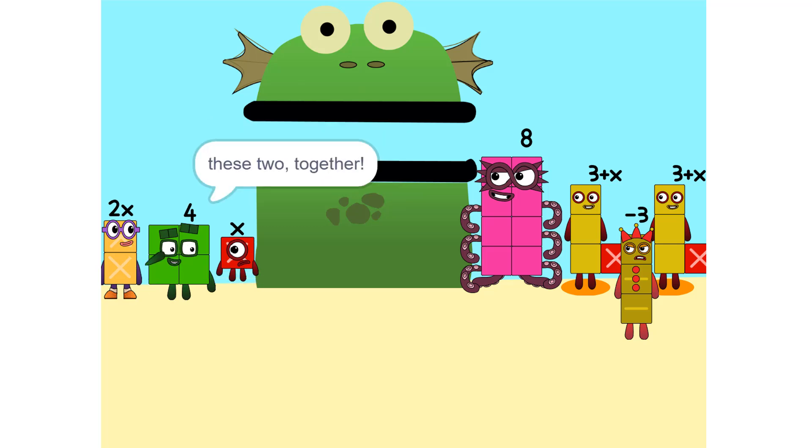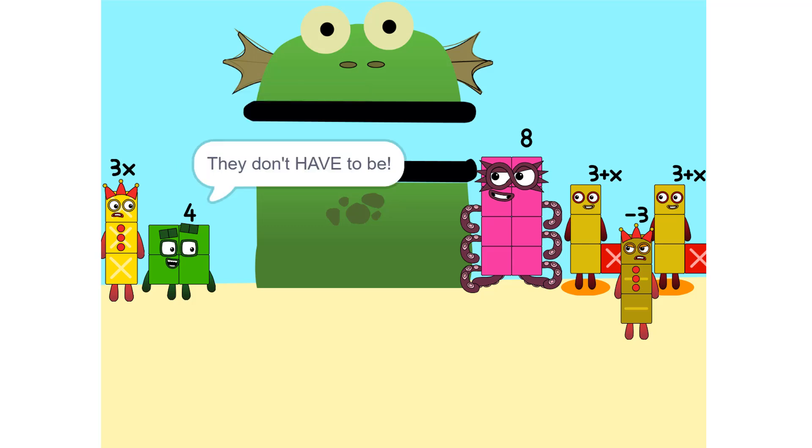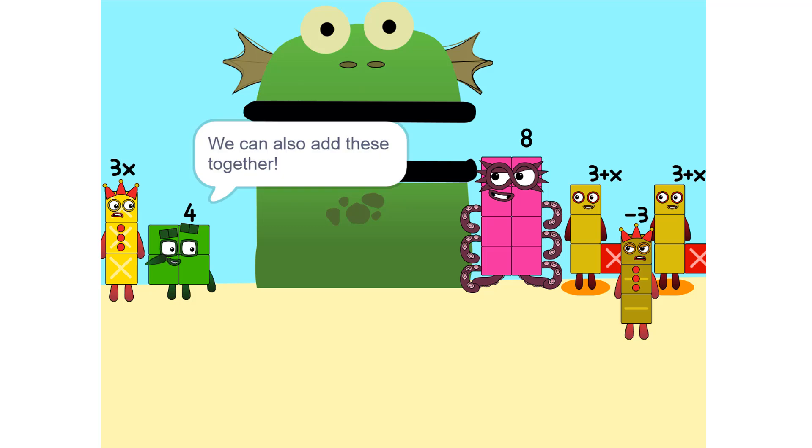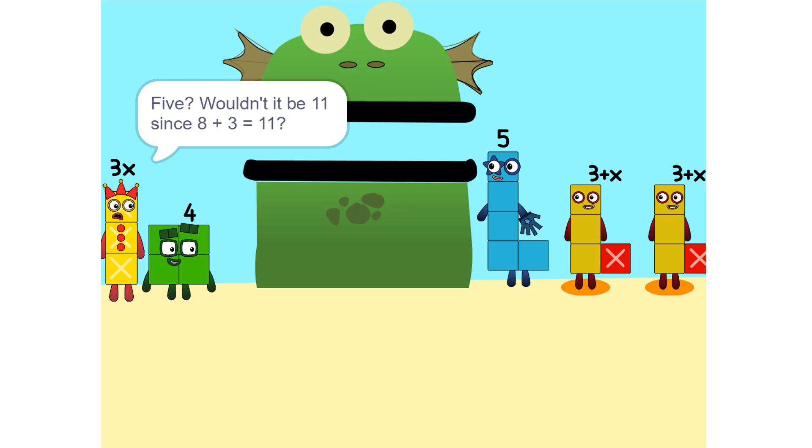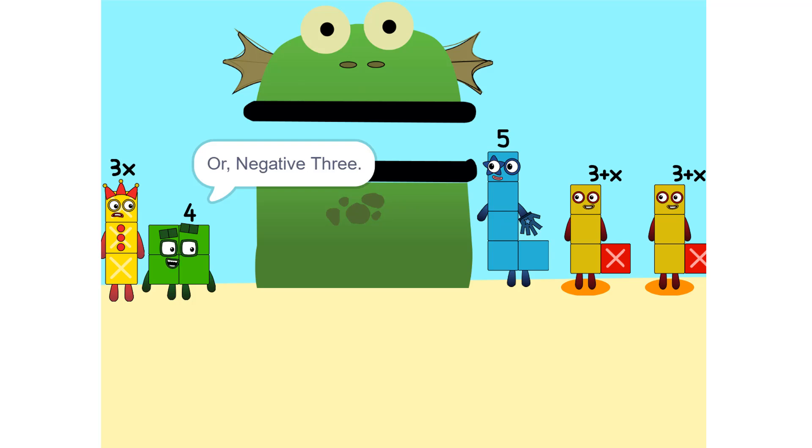One thing we can do is add these two together. How did you do that? We weren't even touching. They don't have to be. Could we do it if we were touching? Yeah. We can also add these together. Five. Wouldn't it be 11 since 8 plus 3 is 11? No. Because we're adding together 8 and minus 3, or negative 3. So it's five.